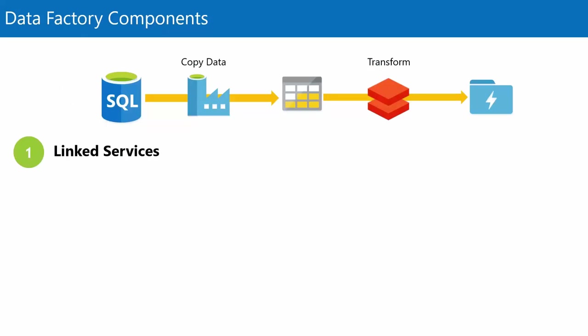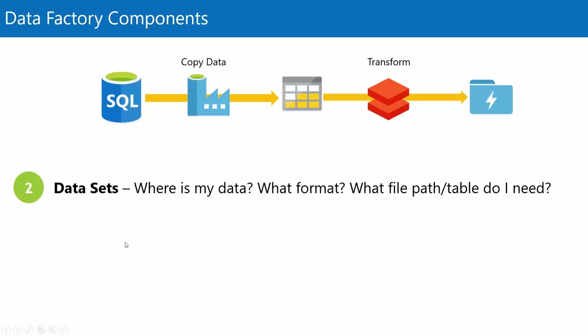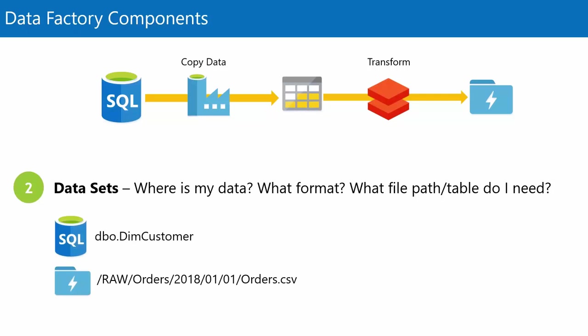The second thing we need is the notion of a dataset. This isn't the actual data we're working with — it's where that data is going to be and what format. For a SQL table, it's the table schema and name. For Data Lake storage, it's the file path. The dataset can also include schema information — it's the metadata that Data Factory needs, driven from those linked services, to understand what it's going to do.